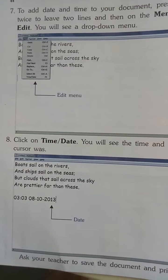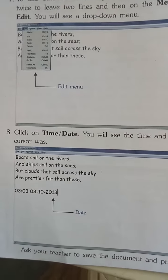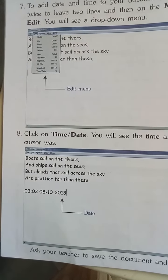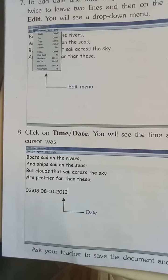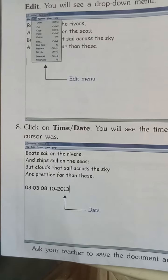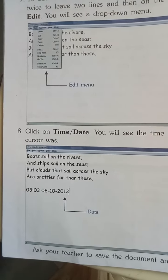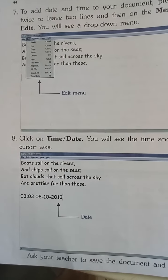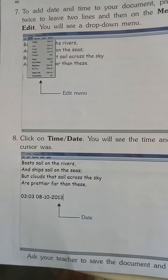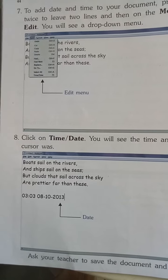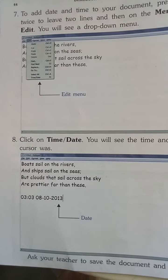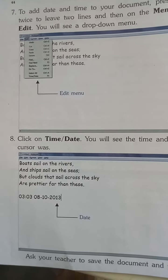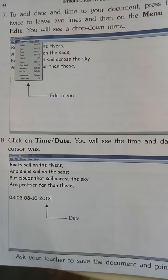Document ko save karna hai — File menu ke andar jaake Save ka option aata hai, uske oopar click karoge. To uska dialog box open hoga, usme file name me aapko suitable file name dena hai, phir aapko Save button pe click karna hai.